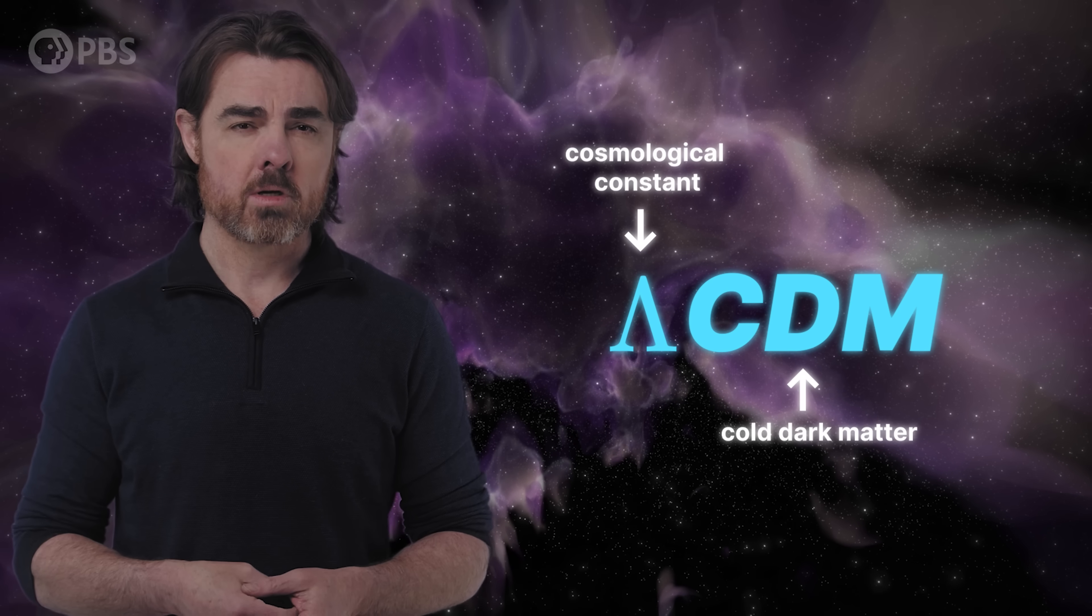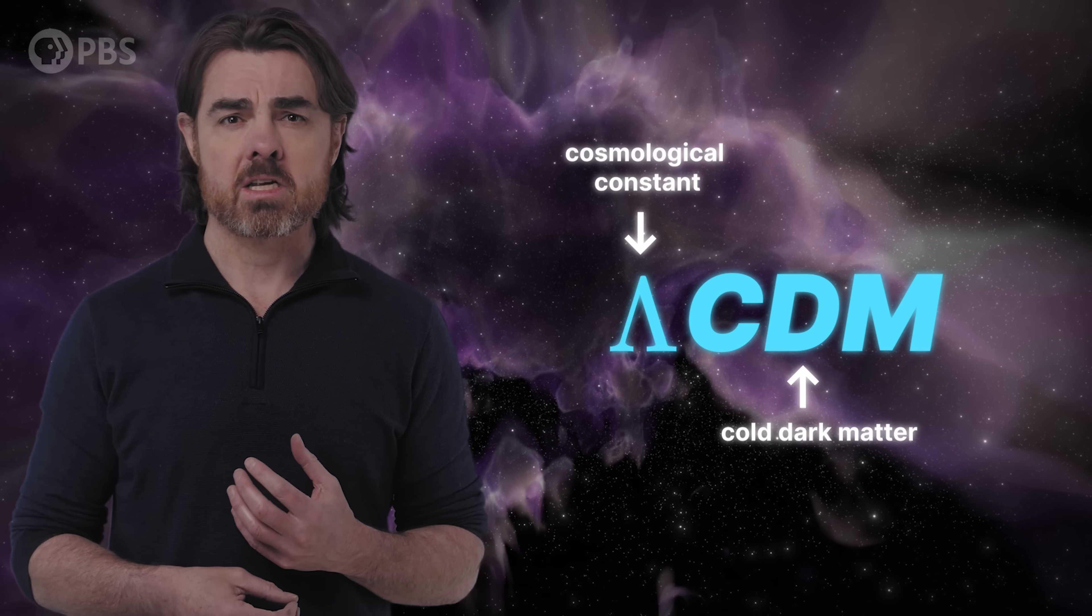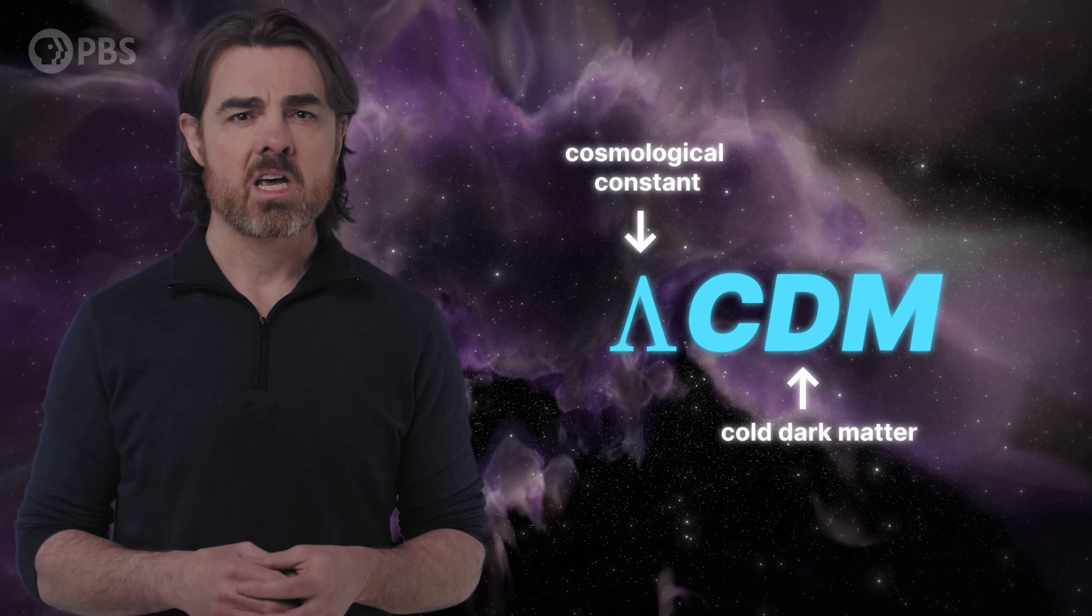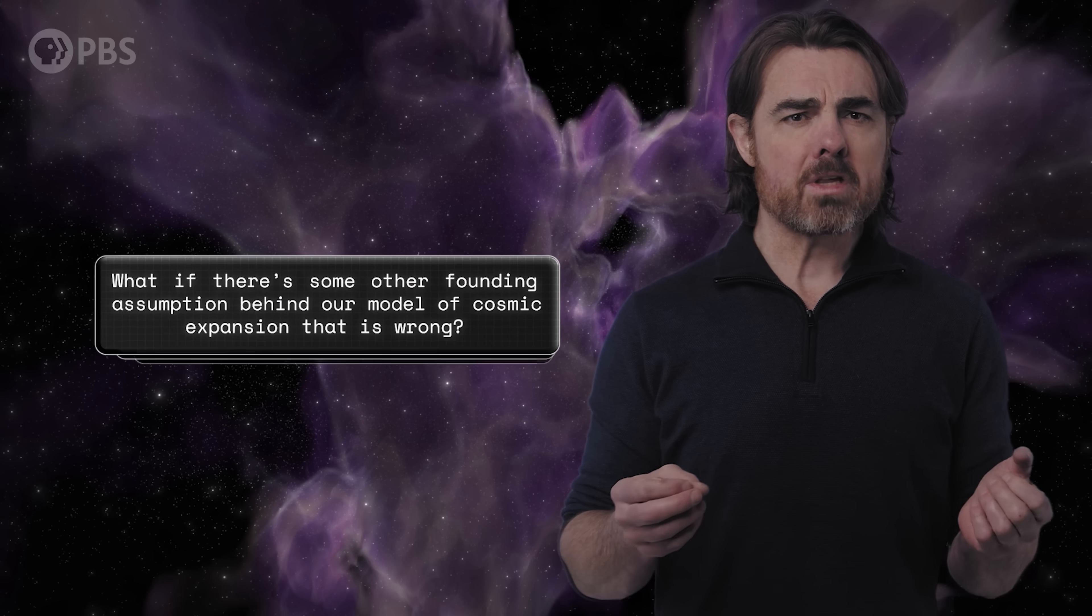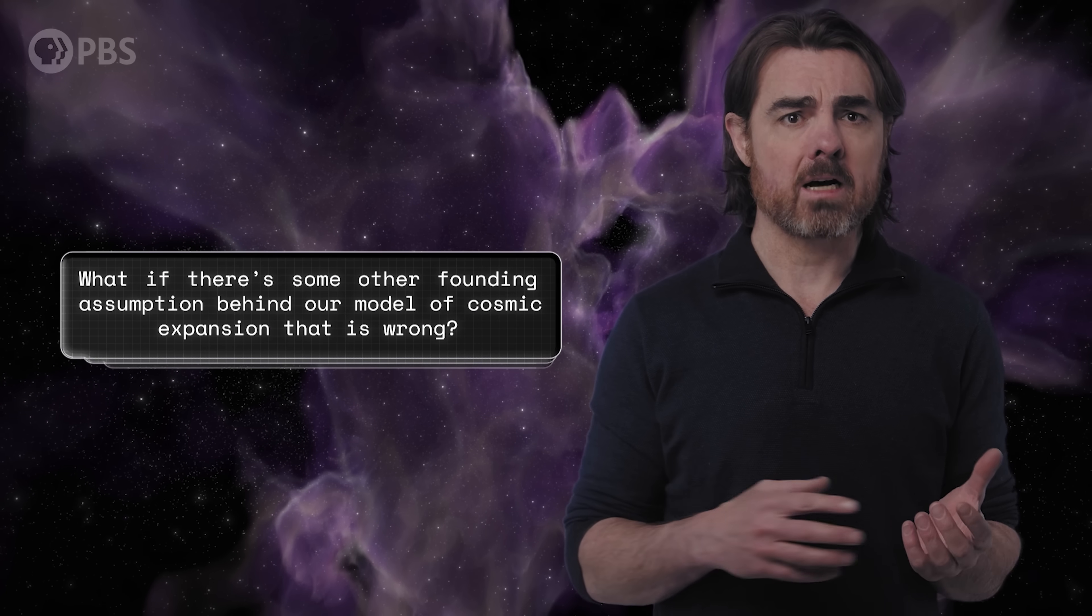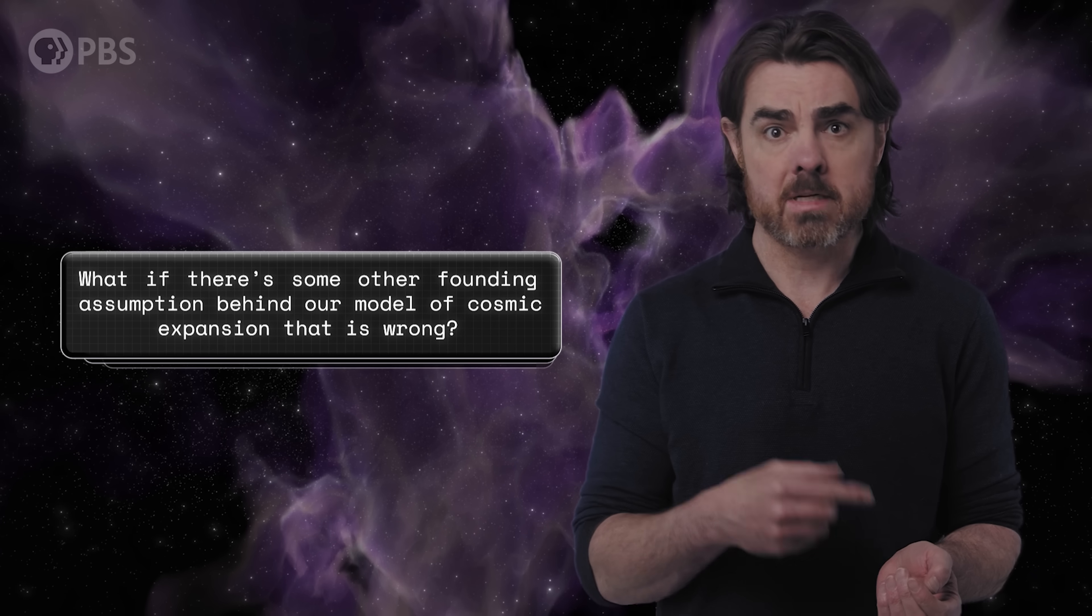We don't really know what causes this accelerating expansion. Top contender is some sort of energy of the vacuum itself. But whatever it is, we call it dark energy. And its discovery scored our supernova collectors the Nobel Prize in Physics. The existence of dark energy in the form of a cosmological constant is now part of our dominant mathematical description for how the universe works on the larger scales. The Lambda-CDM model. Lambda-CDM does such a good job of explaining a whole range of observations that it's hard to avoid the conclusion that something like dark energy must exist. On the other hand, we've really never measured cosmic acceleration directly. We've just found that models with dark energy fit the data better than models without it.